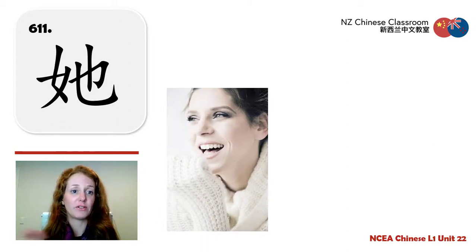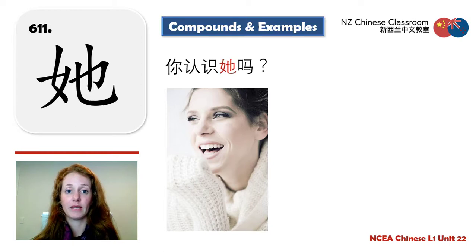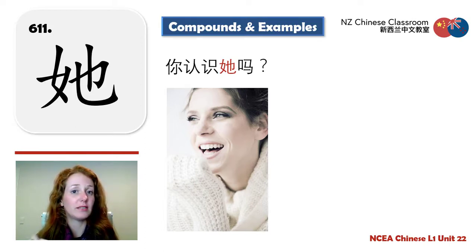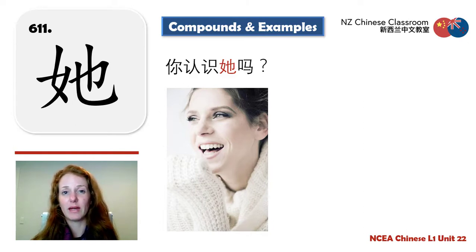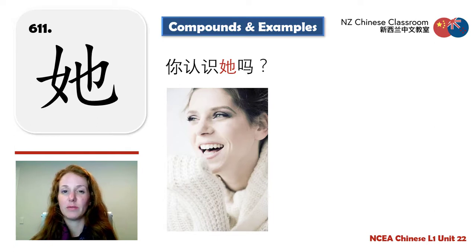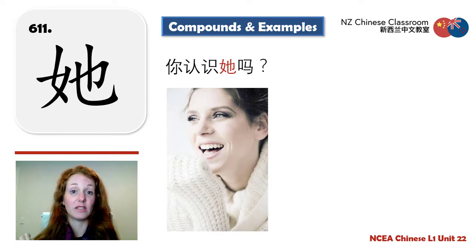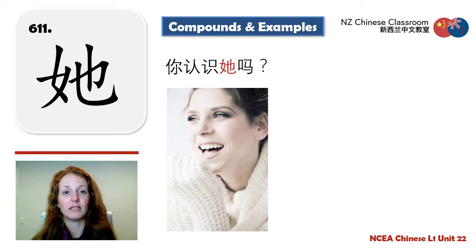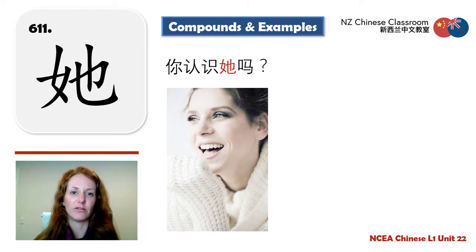她 — she or her. Also the first tone, remember. Example: 你认识她吗? Do you know her? The trick with 他 for him and 她 for her is context. It's a different character which is helpful, but when speaking, context tells you if it's referring to a boy or a girl.